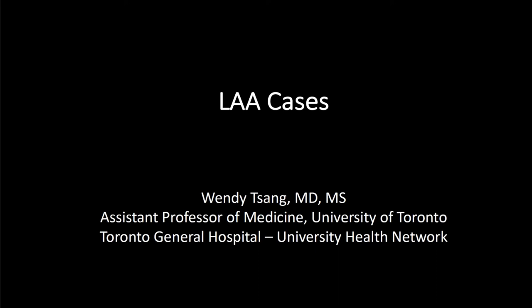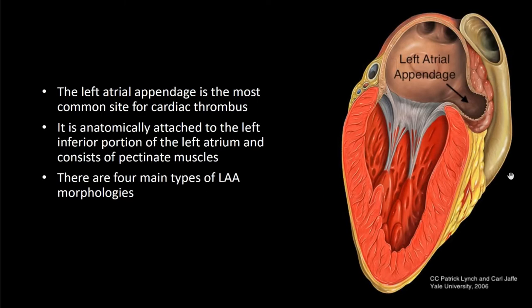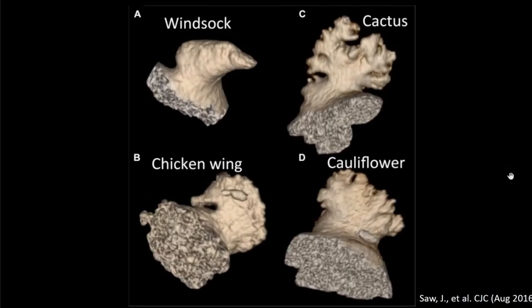We're going to talk about left atrial appendage cases, and before we start, just a brief review. The left atrial appendage is the most common site for thrombus, and that's why we actually care about it a lot. Anatomically, it's attached to the left inferior portion of the left atrium, and it consists of pectinate muscles. There are four types of left atrial appendage morphologies that we commonly see.